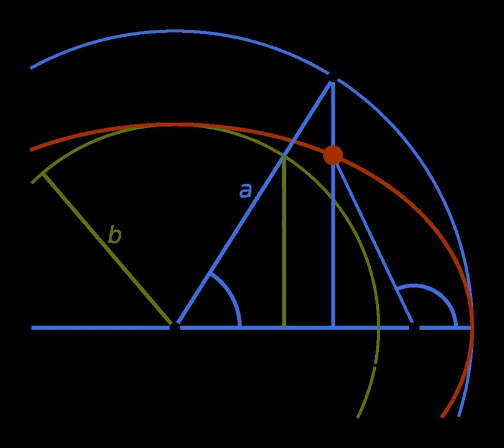The eccentricity e is defined as e equals the square root of 1 minus b over a squared.